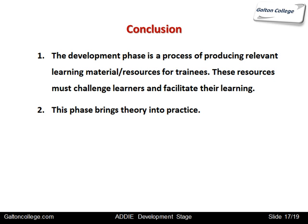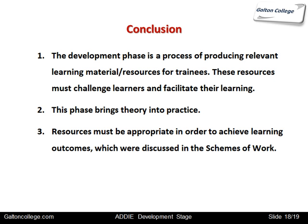It looks at what the course document wants to achieve and gets the material that is appropriate and efficient to bring about the requirements of the course — meeting the objectives set out in an efficient manner with the most appropriate material. The resources must be appropriate in order to achieve learning outcomes, and these learning outcomes are specified in the schemes of work in the course document developed in the design phase of the ADDIE model.